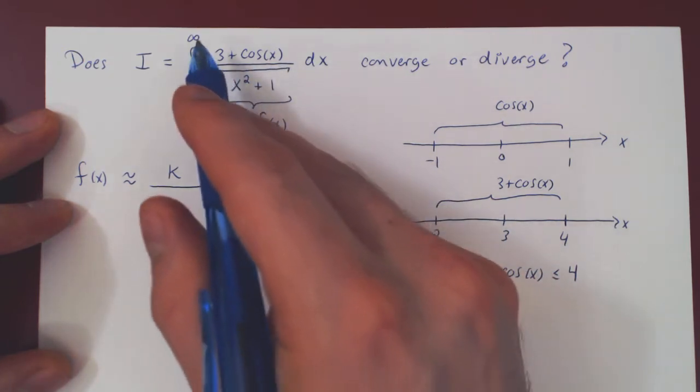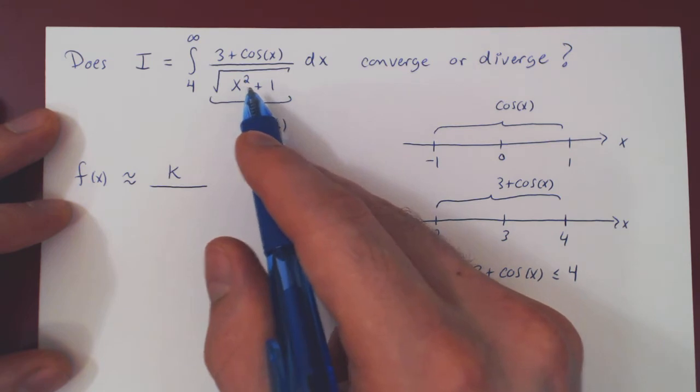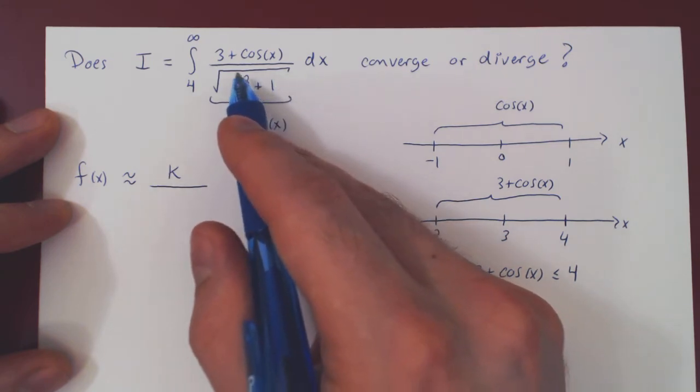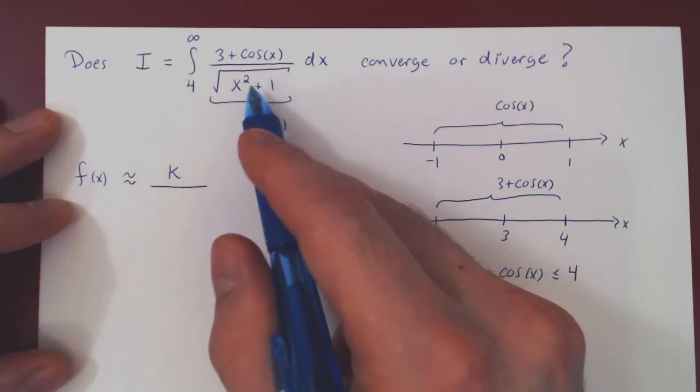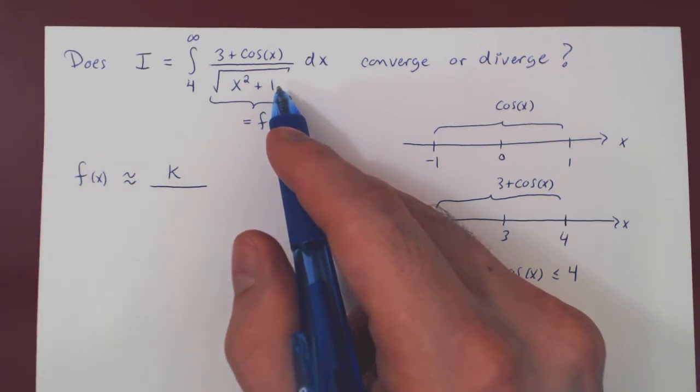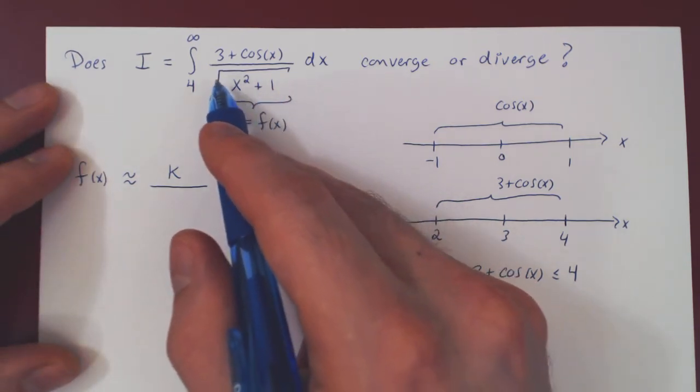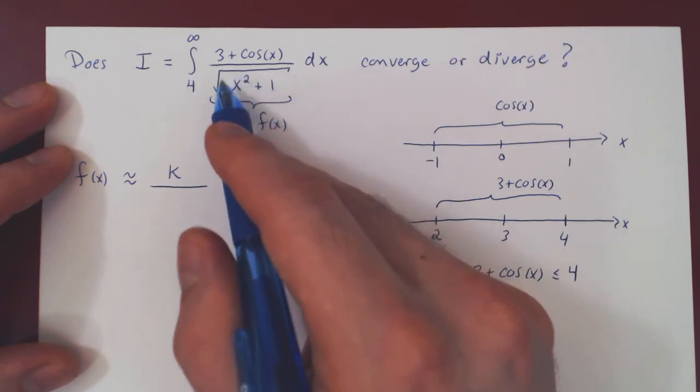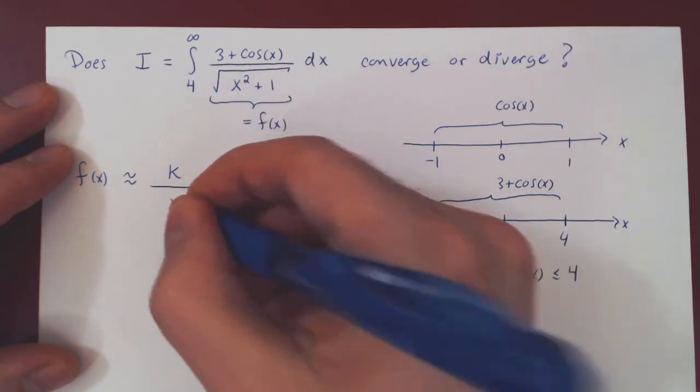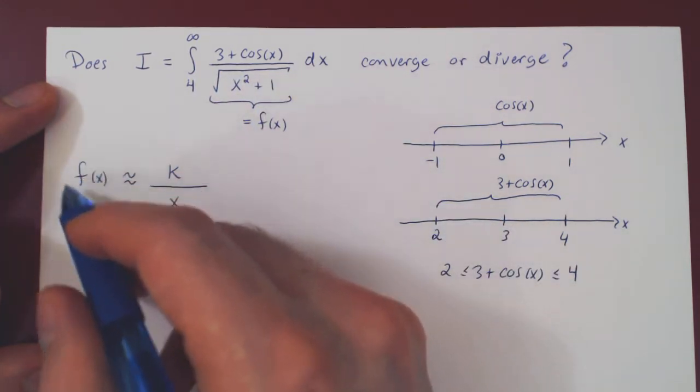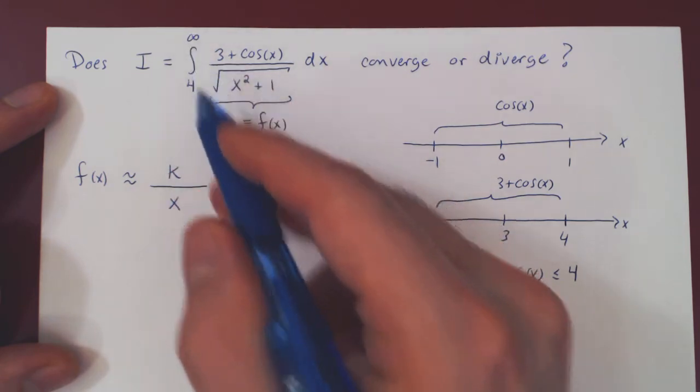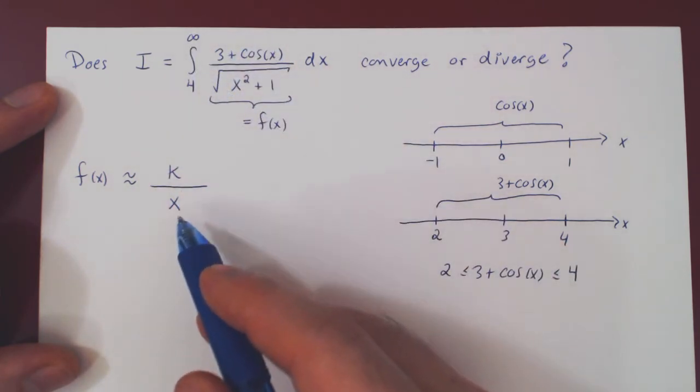If you think of it, when x is very large, 1 is insignificant. As x² is much larger, we can ignore the 1, again looking at the intuition. And we're left with the root of x², and as x is positive, this is simply x. And so our function, when x is very big, is roughly a constant over x.